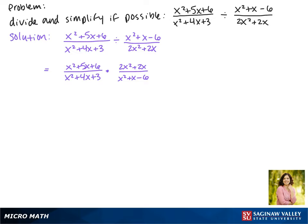So now we can factor. Here the factors of 6 that make 5 are positive 3 and positive 2. In the denominator, the factors of 3 that make 4 are positive 3 and positive 1. Here we factor out a 2x from both terms, so we get 2x times x plus 1.